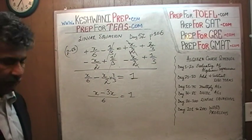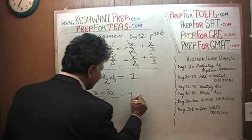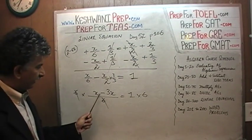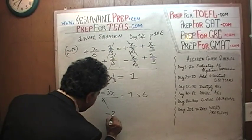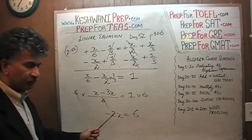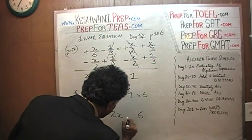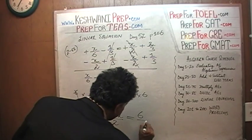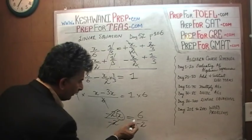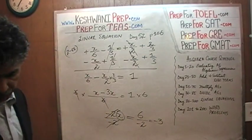So we don't want this 6 at the bottom. We've got to get rid of it. So we multiply both sides of the equation by 6. And we are left with x minus 3x. x minus 3x is negative 2x. Negative 2x equals 6. But we just want x by itself. So we divide both sides of the equation by negative 2. This negative 2 will cancel out with this negative 2. And we are left with x, which is equal to 6 over negative 2, which gives us negative 3. There is your answer. Negative 3 is the answer.